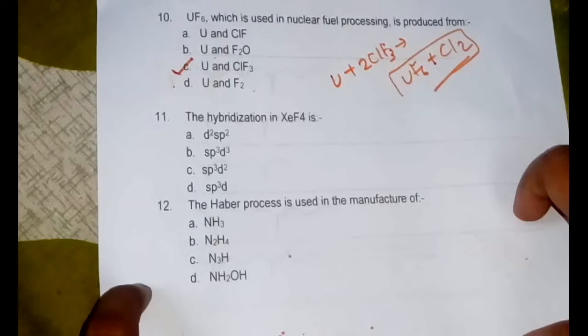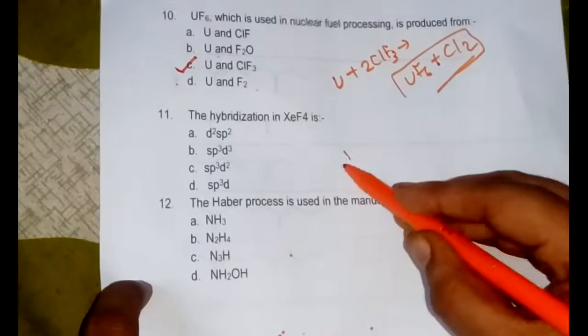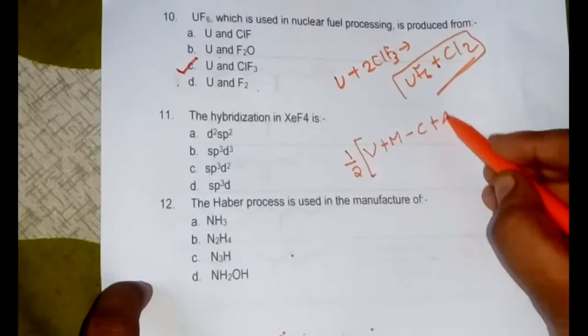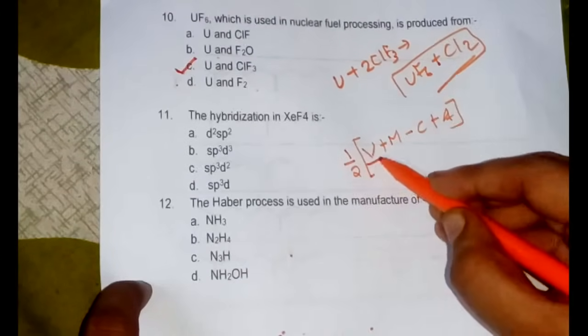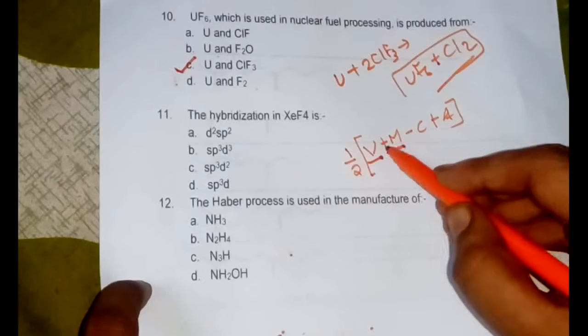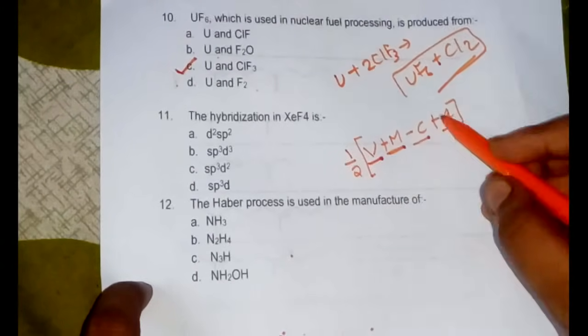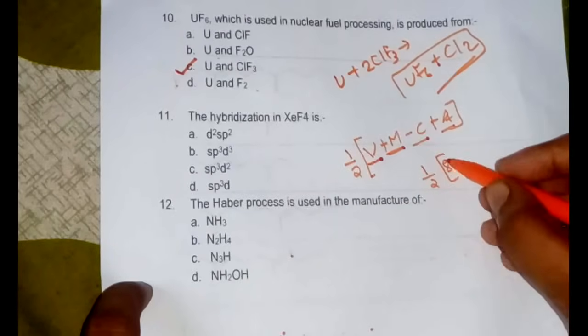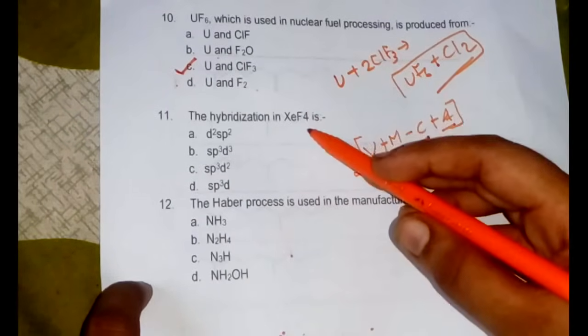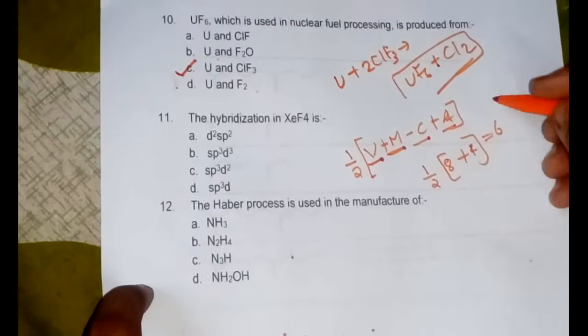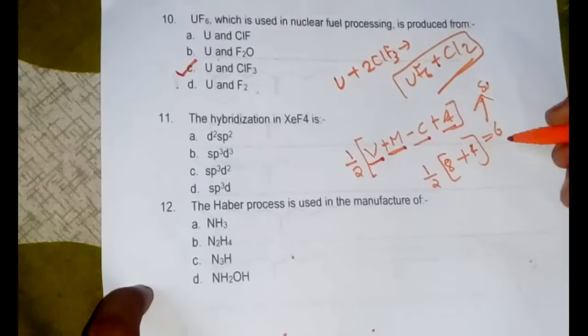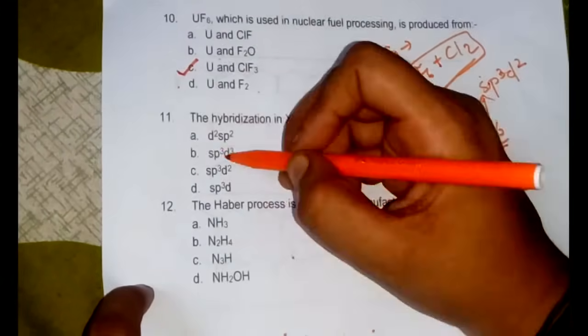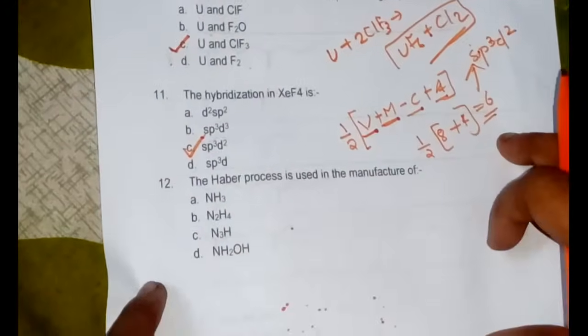Next, the hybridization in XeF4 is - so what is the formula of finding the hybridization? First we have V plus M minus C plus A. V is the number of valence electrons of the central atom, M is the number of monovalent groups attached to it, C is the charge of the cation, A is the charge of the anion. Here that is neither cation nor anion. Valence electron of xenon would be 8 plus number of monovalent F is 4, so it would be equal to 6. According to the table, if we are having the value as 6 our hybridization would be sp3d2, option C would be our answer.